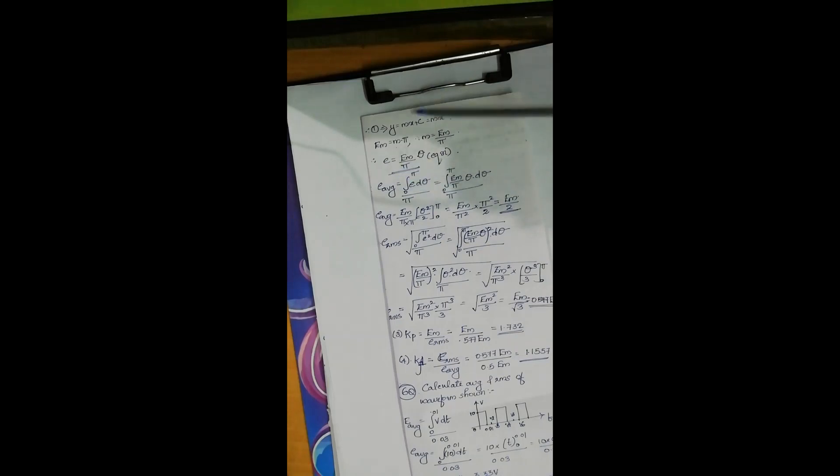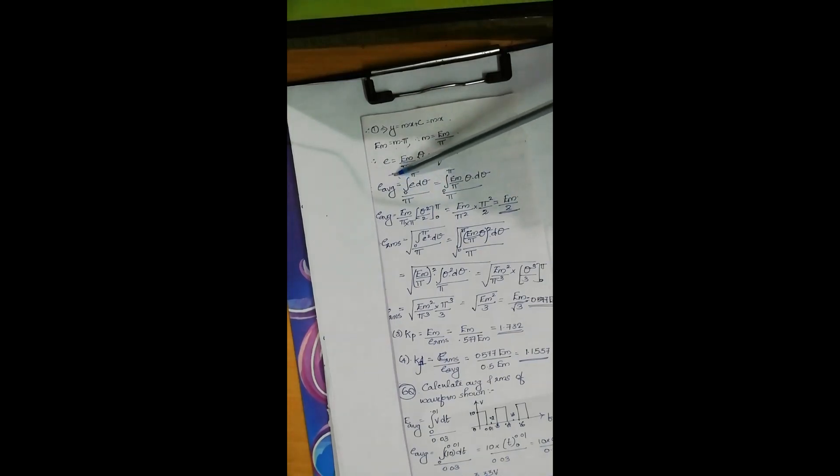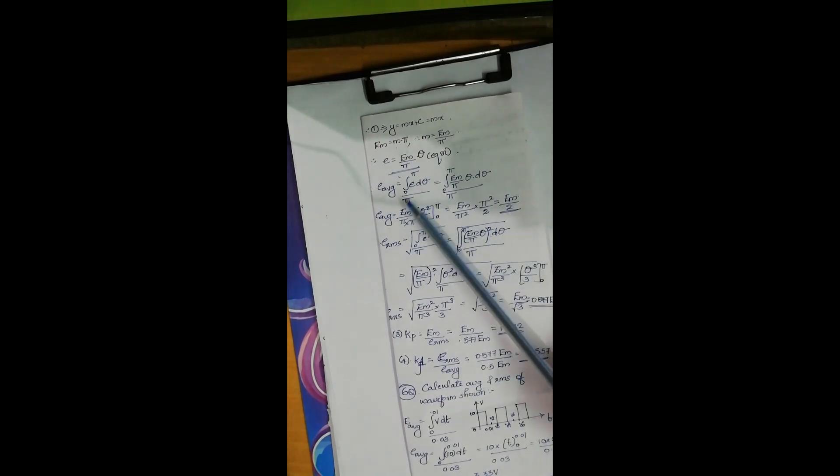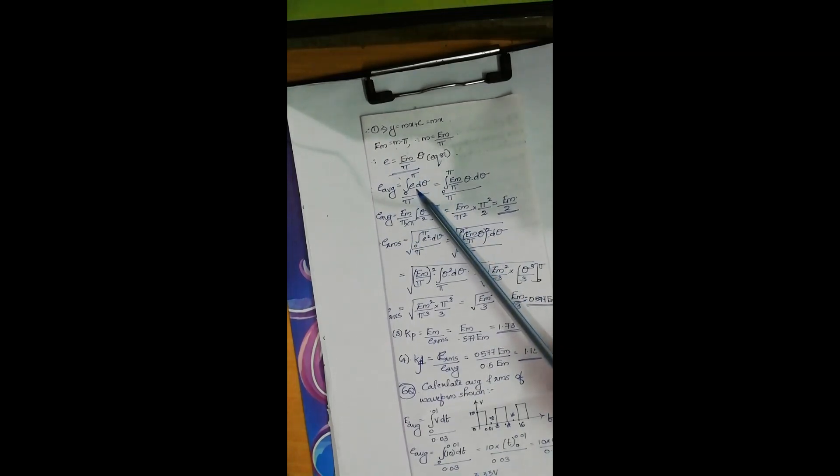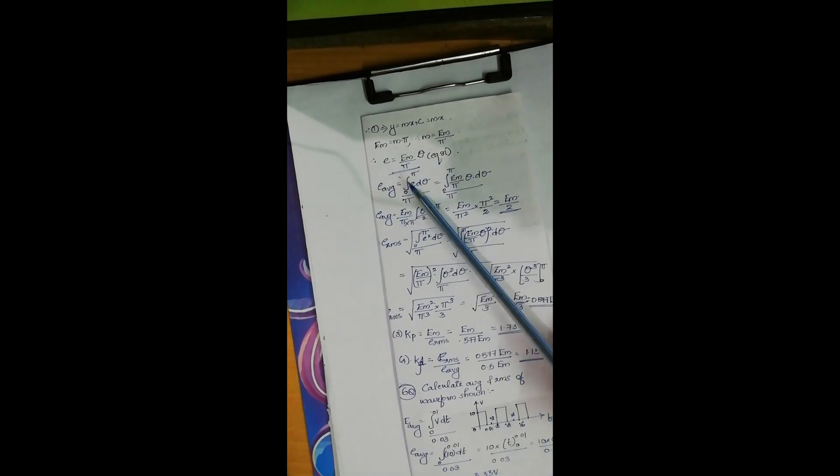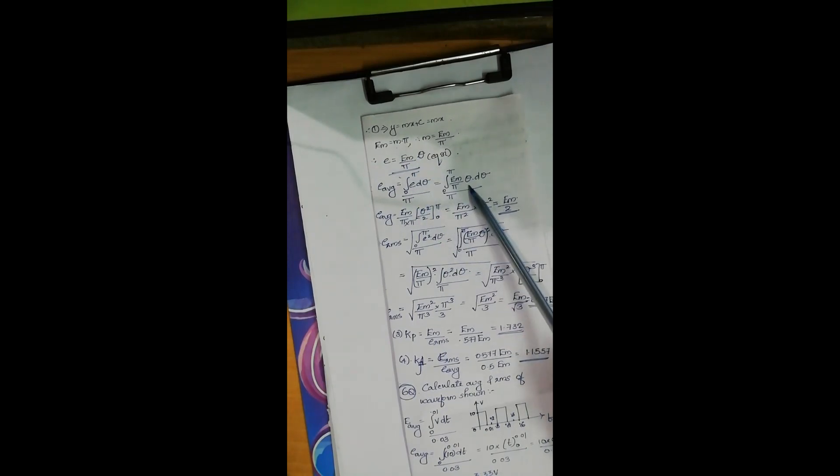For average value, e average is calculated as integral 0 to pi, e d theta divided by pi, where e is obtained as Em by pi theta.